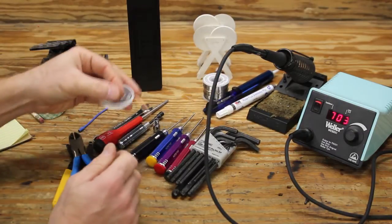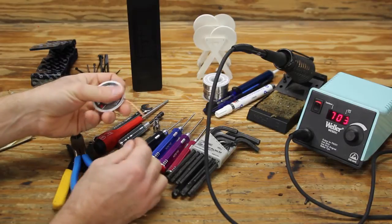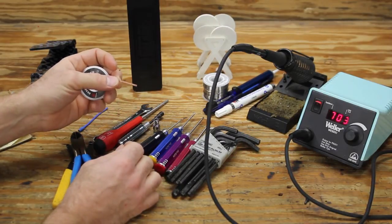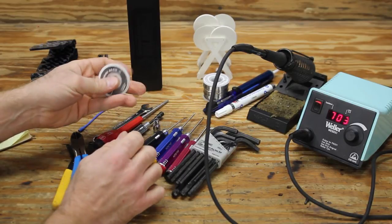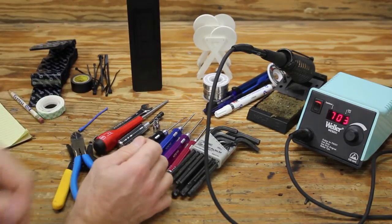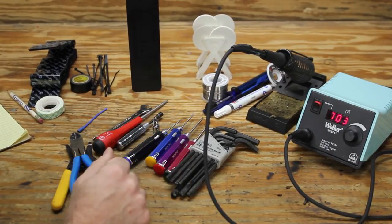Another way to get rid of solder that you don't want is a desoldering braid. All this is is braided bare copper. When you melt the solder and you put this down into it, it sticks to the braid. It gets soaked up in there and allows you to remove it. So that's the soldering setup.